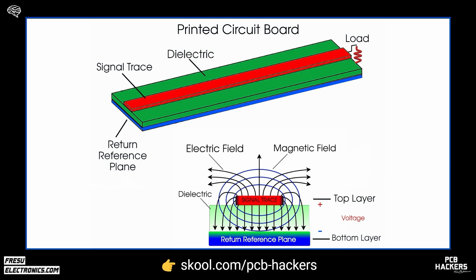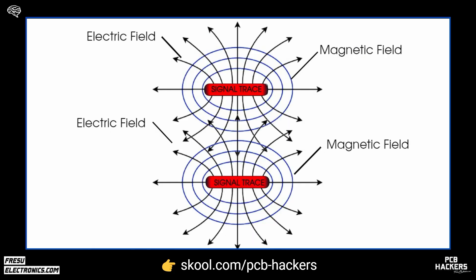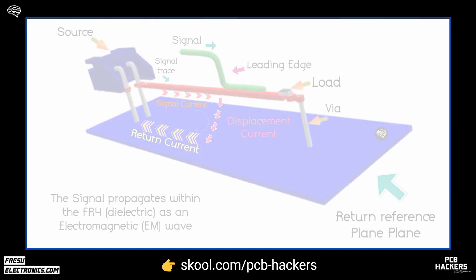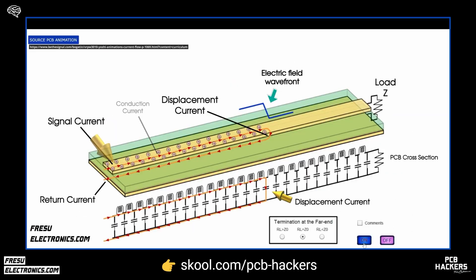What we've explained so far should also address why having the return reference plane adjacent to the signal trace in the stackup is the optimal choice. Firstly, if the fields generated from the signals are not separated they could interfere with one another. Secondly, it's due to the importance of completing the current loops — if the current loops are not closed the current cannot flow. These loops can be completed through two types of current: conduction current, which includes signal current and return current, and displacement current, or a combination of both. More detail can be found in the lesson on how signals propagate in a printed circuit board.